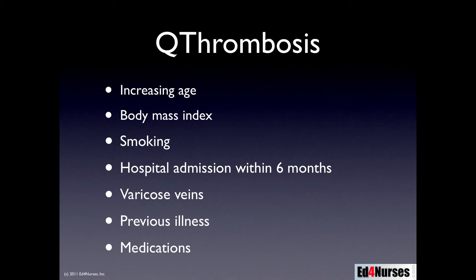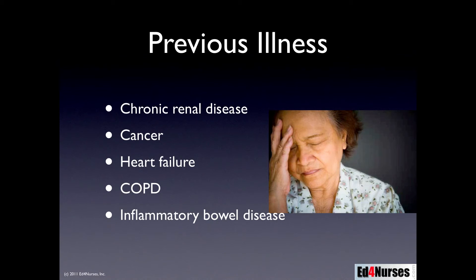Previous illness also matters. Chronic renal failure, cancer, heart failure, COPD, and inflammatory bowel disease all increase the risk. In chronic renal disease, the patient may have fluid and electrolyte disorders plus slow, sluggish circulation. In cancer and inflammatory bowel disease, an immune-inflammatory response makes blood tend to clot more than normal. In heart failure, slow sluggish circulation can lead to clots. In COPD, hypoxemia can stimulate blood clotting along with other coexisting diseases.